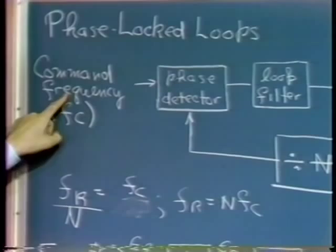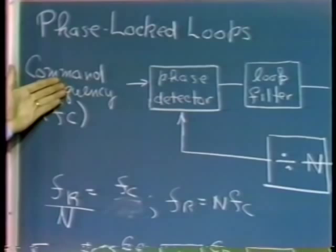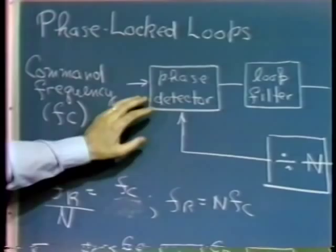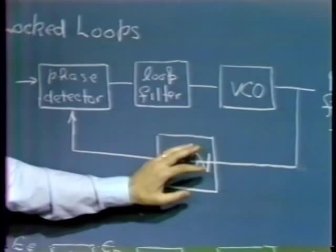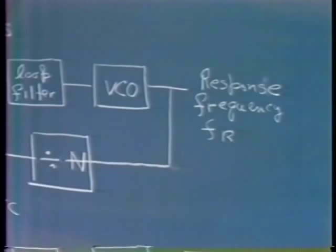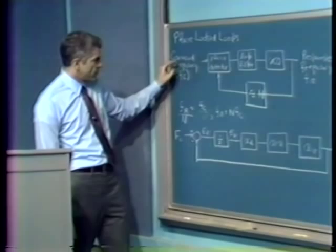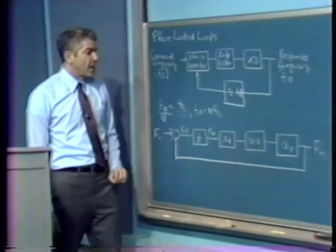When we use this technique for frequency synthesis, we make the command frequency a very precisely known frequency derived from a very high-stability oscillator — an atomic standard, something like that. By changing the division ratio N in a digital divider, we can in discrete steps get a response frequency that's a direct multiple of the command frequency. We can generate multiple frequencies, each with the same stability as the command frequency — and so this technique is used in frequency synthesizers.